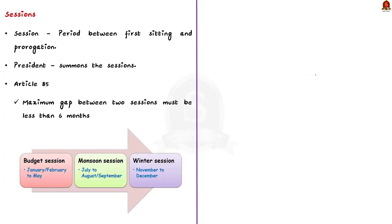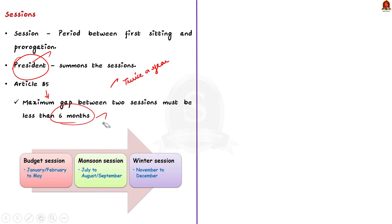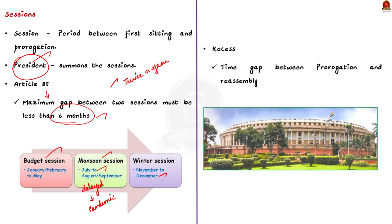It is the President who summons each house of parliament to meet from time to time. Parliament meets at least twice a year because the maximum gap between two sessions cannot be more than six months, as per Article 85 of the Indian Constitution. There are usually three sessions of parliament in a year: the budget session from February to May, the monsoon session from July to September, and the winter session held in November and December. A session refers to the period spanning between the first sitting of the house and its prorogation, while recess refers to the period between prorogation and reassembly in a new session.